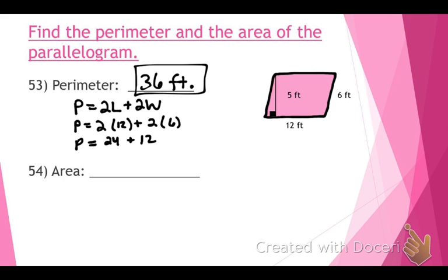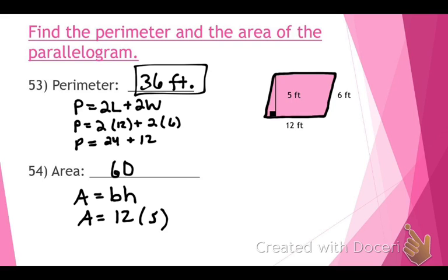Now for the area of the parallelogram. Ashley, what's the formula? Area equals base times height. The base is 12 and the height is 5: 12 times 5 equals 60 feet squared. Thank you for saying squared — good job.